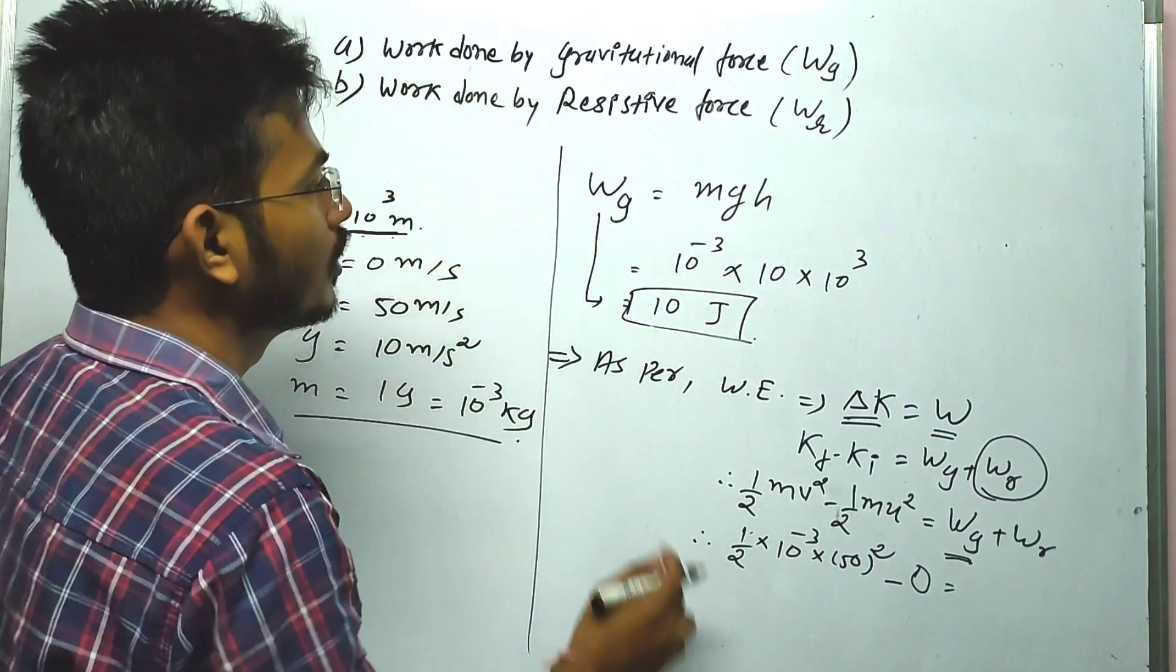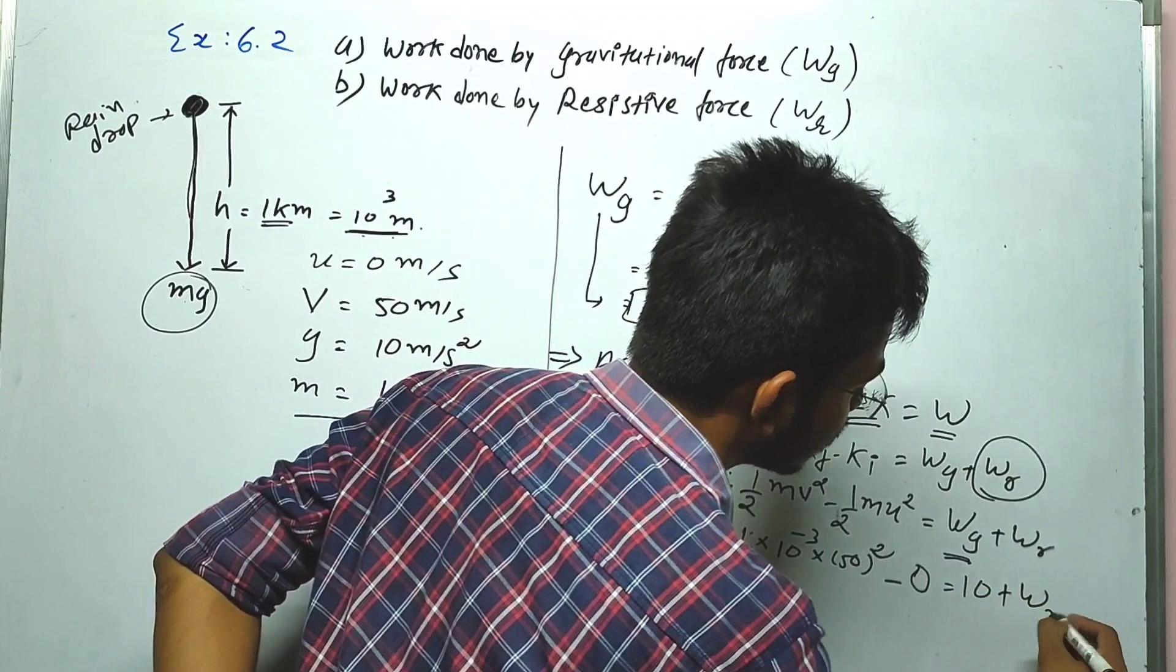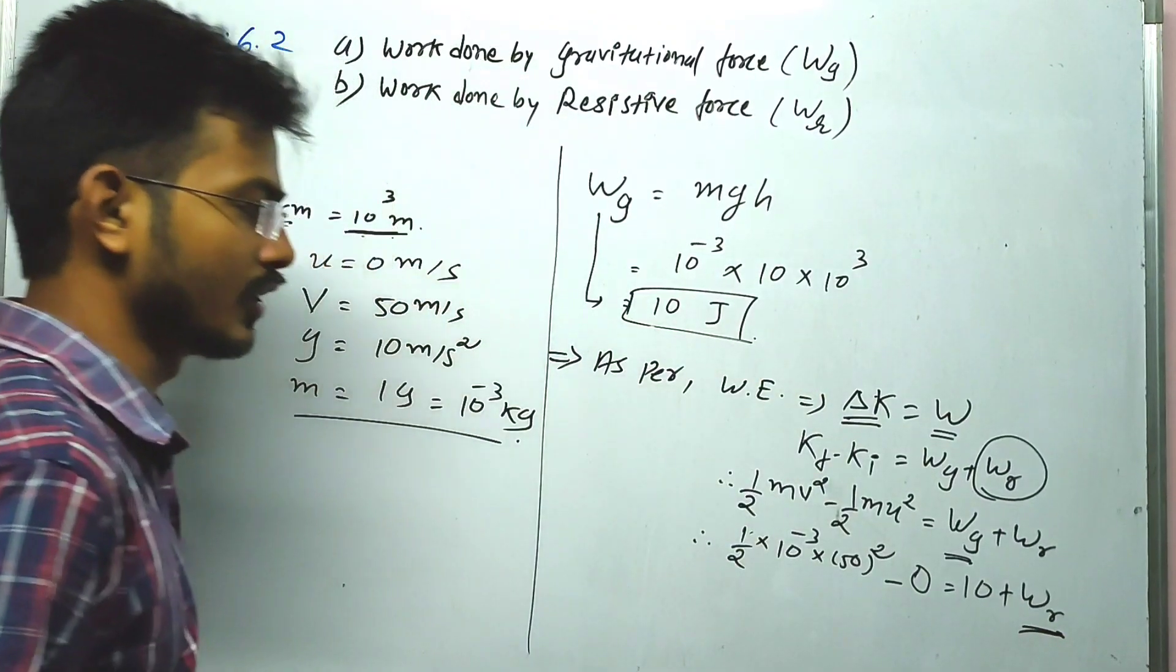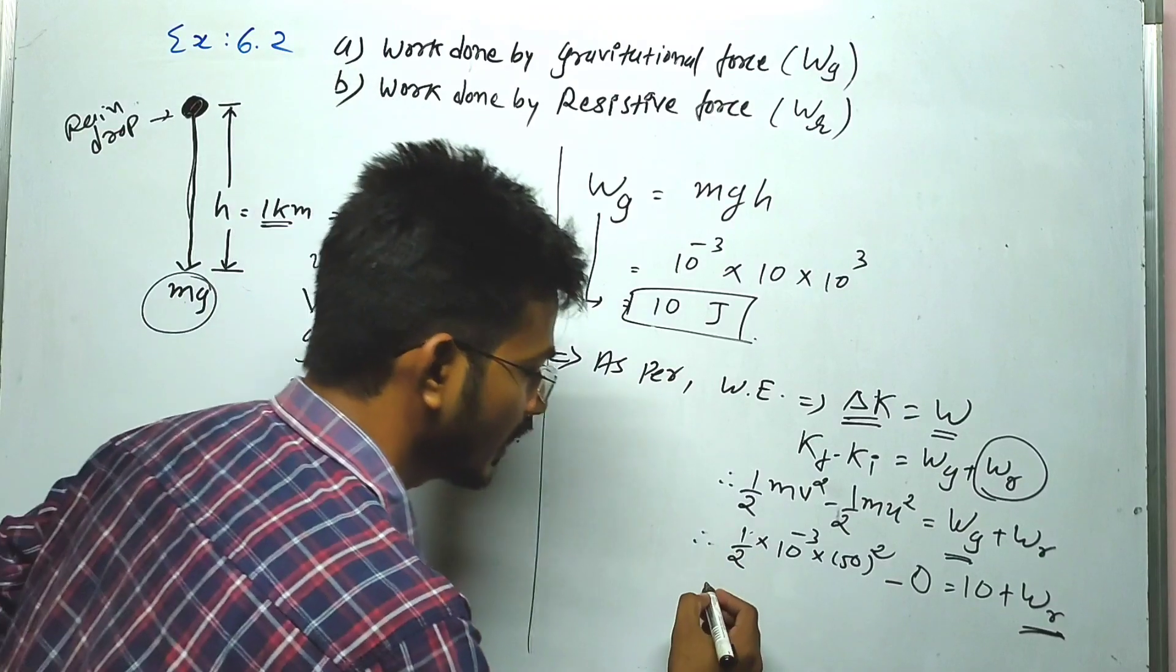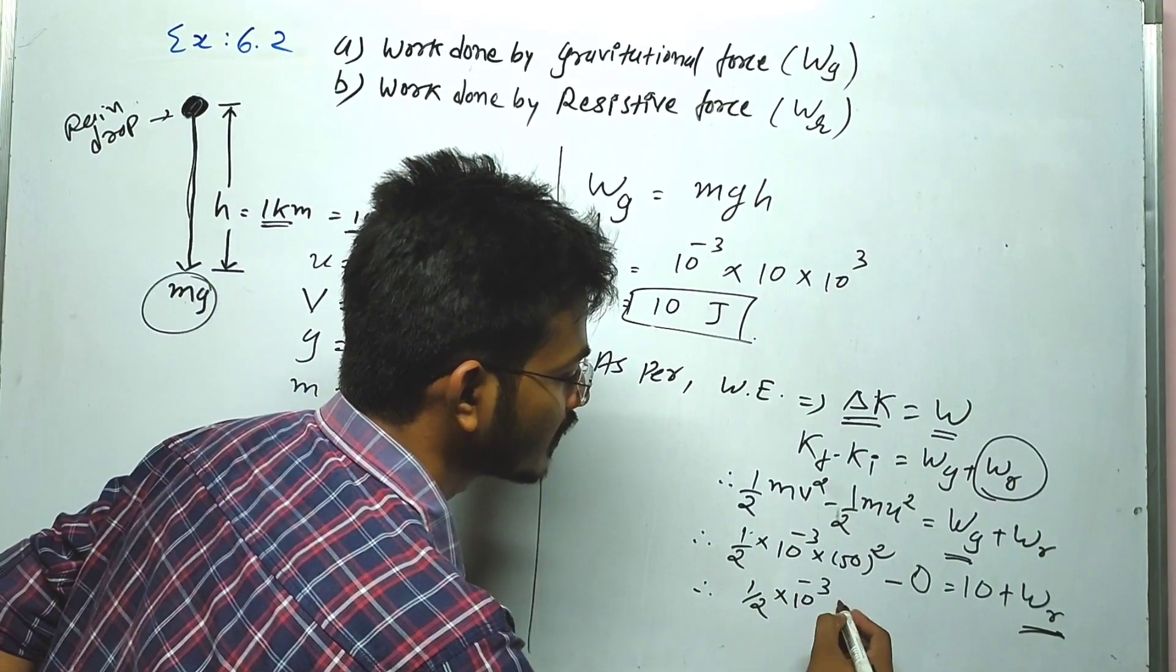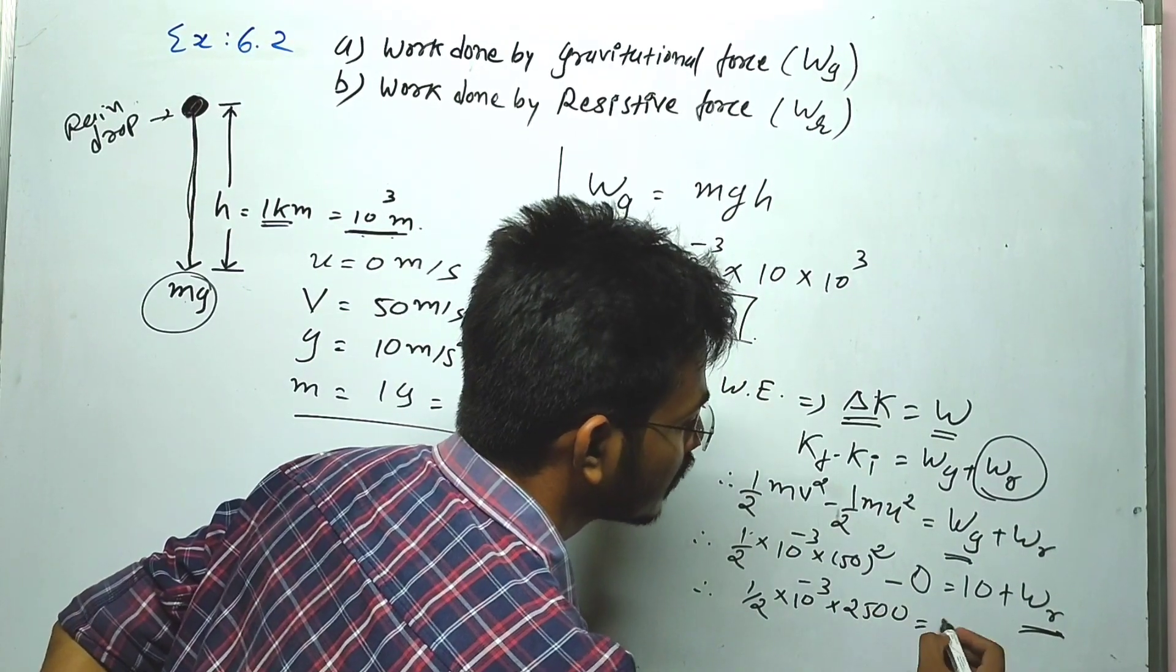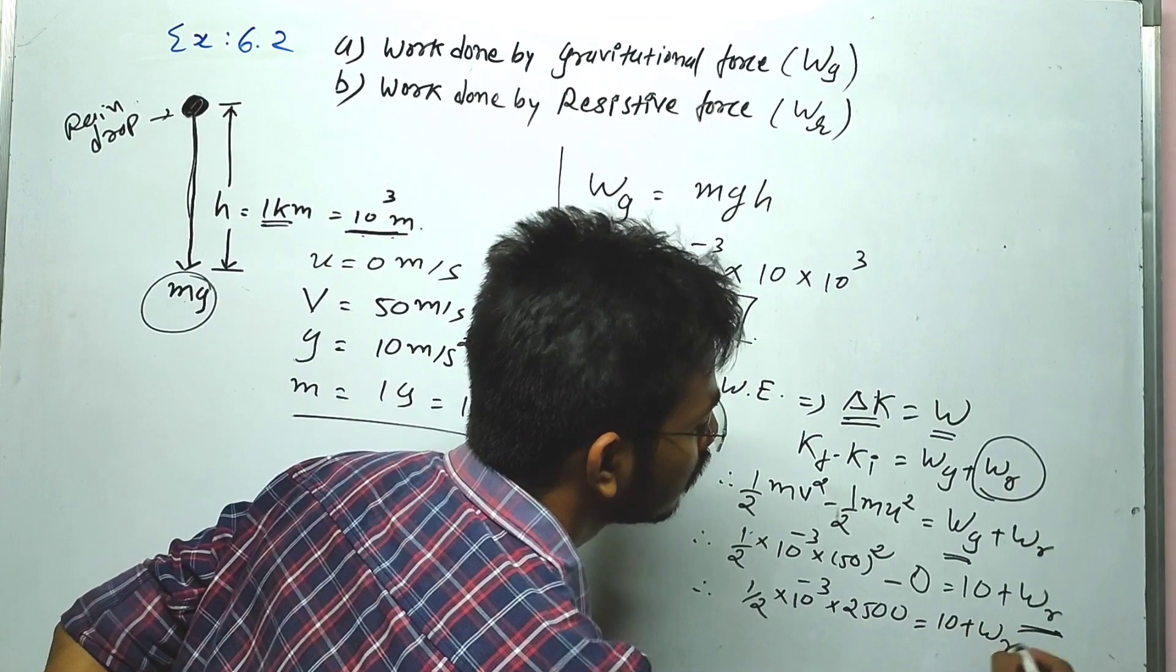WG we already found is 10 plus WR. Now simplify: one half multiplied by 10 raise to minus 3, 50 squared is 2500. The answer is 1.25 equals 10 plus WR.